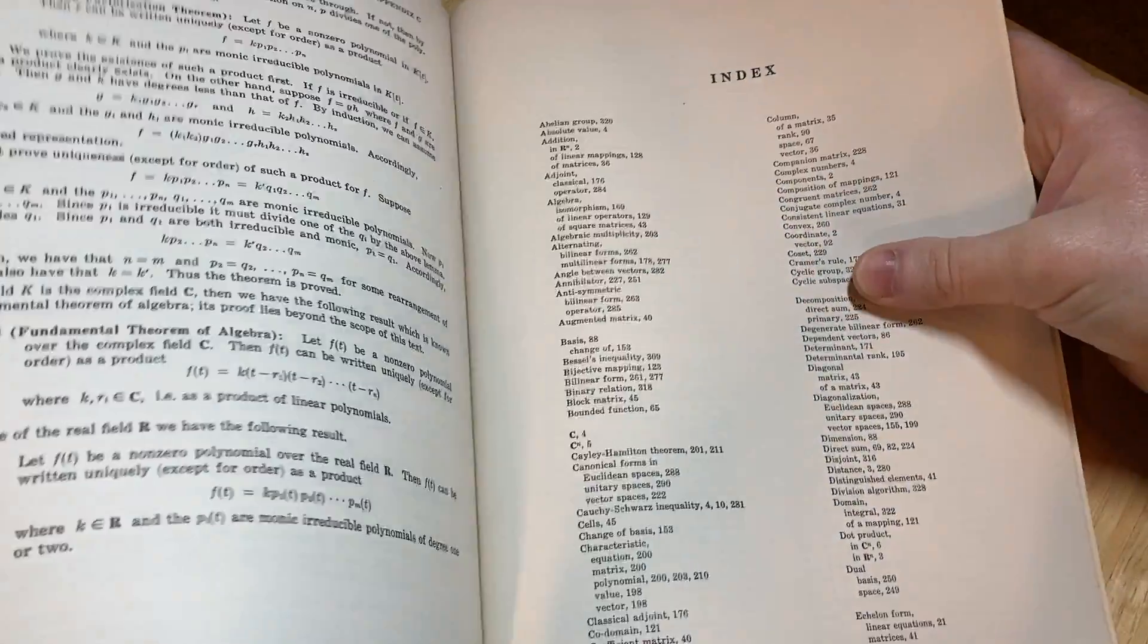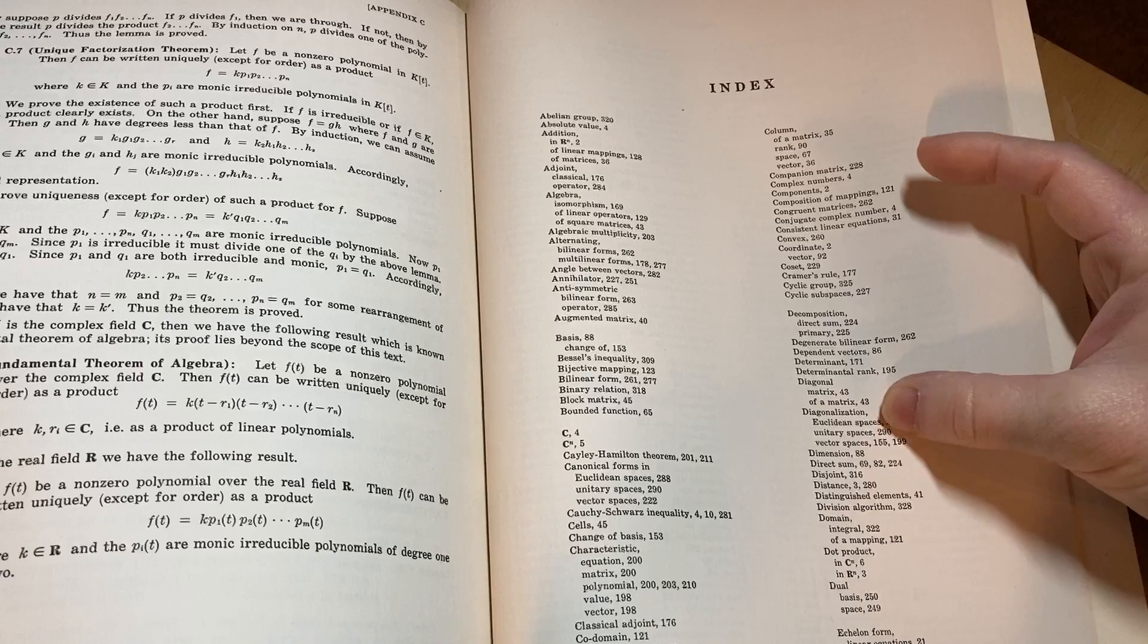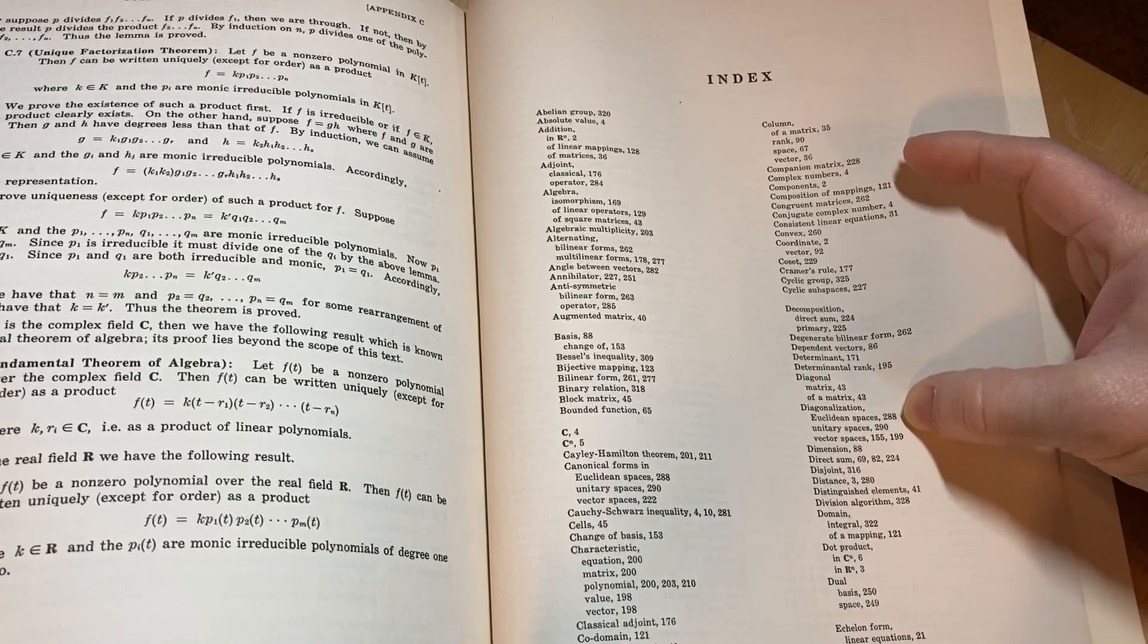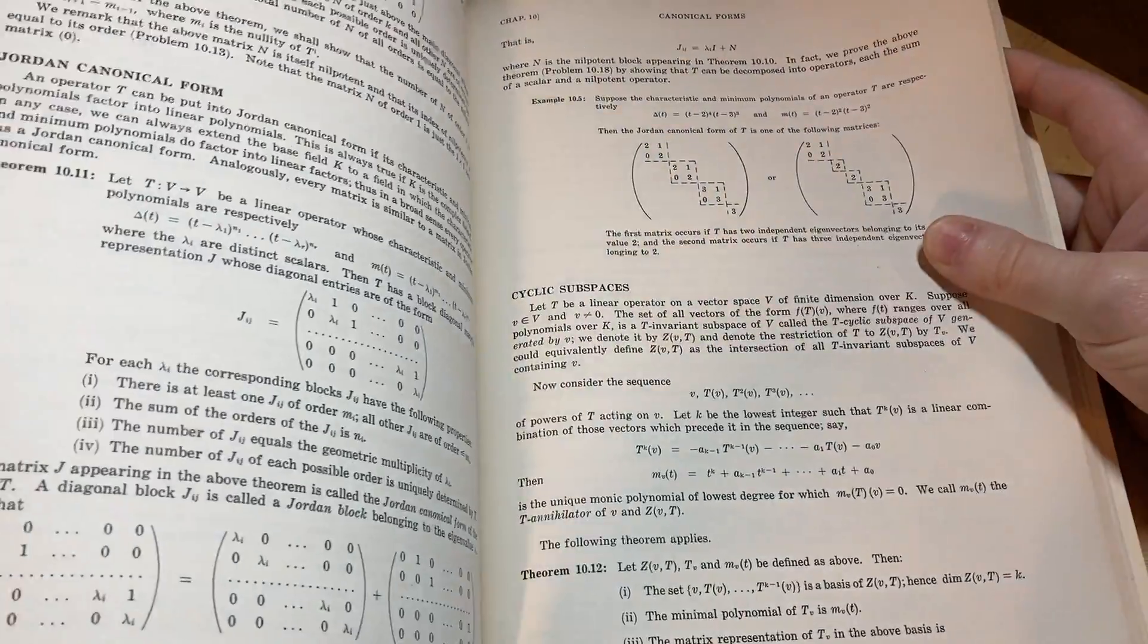So let's say you forgot. You can look up diagonalization. So there it is. And then 288, 290, 155, 199. So you've got a couple places there. You can go and look that up.